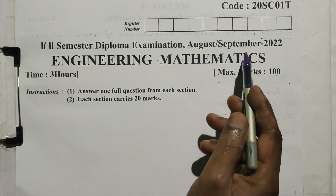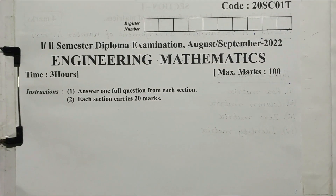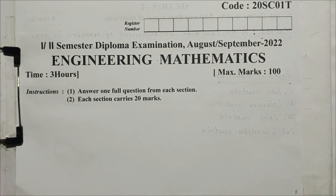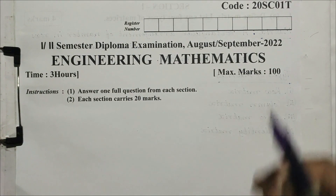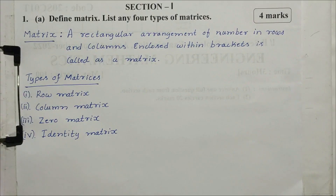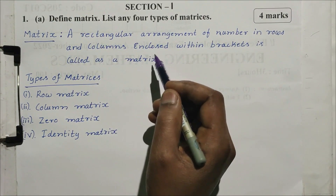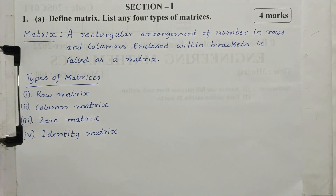Semester Diploma Examination August-September 2022, subject: Engineering Mathematics, time 3 hours, maximum 100 marks. Instruction: answer one full question from each section. Each section carries 20 marks. Course code 20SE01T. Section 1, question number 1: Define matrix, list any 4 types of matrix — 4 marks. A matrix is a rectangular arrangement of numbers in rows and columns, enclosed within brackets.